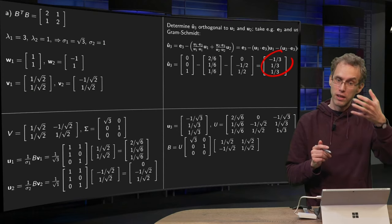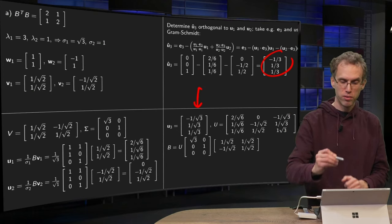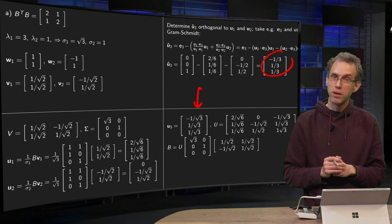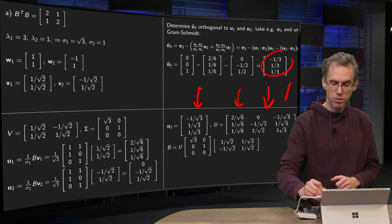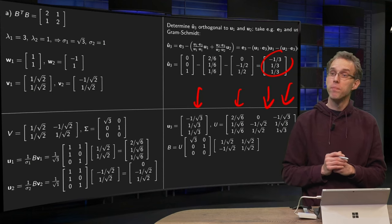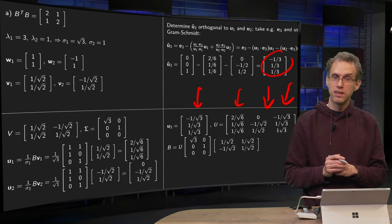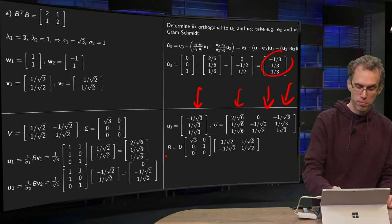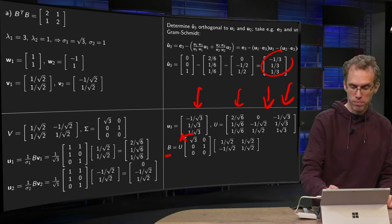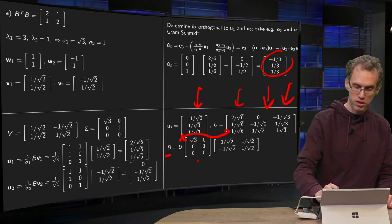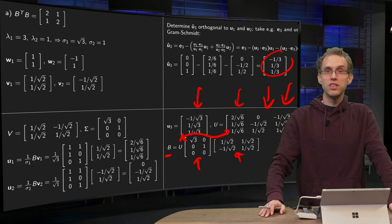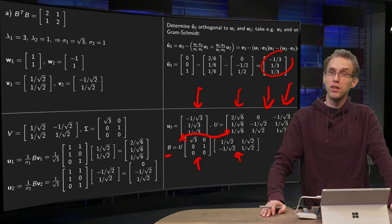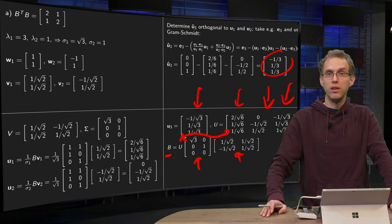And then for your matrix U, you plug in your U1 and U2, which you already had, and the newly computed U3. And then you can check that you indeed have B equals this U times sigma times V transpose. So this is how you find the singular value decomposition of non-square matrices.